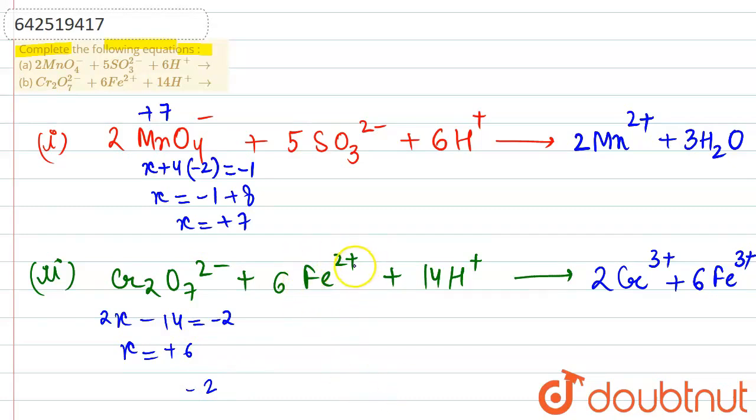we are having 6 into 2. That is +12 charge would be present over here. And after this, if we talk about the H+ ions, then we are basically having 14 H+ ions here. Plus 14 charge. And if we check on the another side of the reaction,